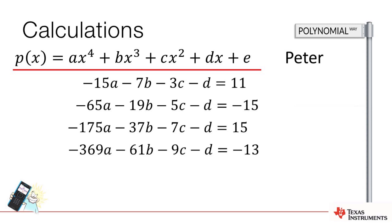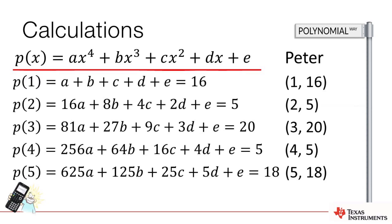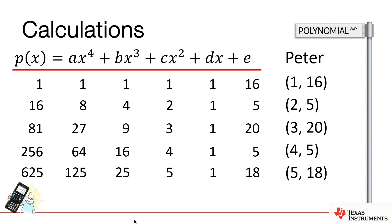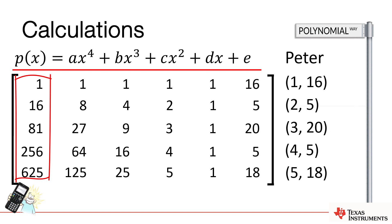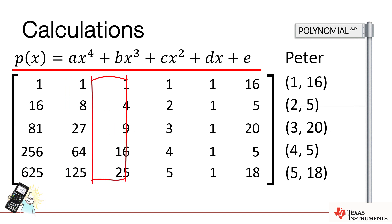I could continue along this path, however there's a quicker way. Let's return to the original equations. If I strip off all the letters A, B, C, D, and E and just look at the coefficients, what we get is something that looks like an array — or dare I say it, a matrix. The first column contains all the coefficients of A, the second column the coefficients of B, C, D, and E, and in the last column we have the Y values: 16, 5, 20, 5, and 18. On the calculator, we can use a special command called row reduction in echelon form, which in essence solves our simultaneous equations with almost just the stroke of a key.